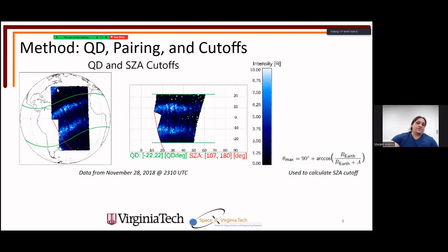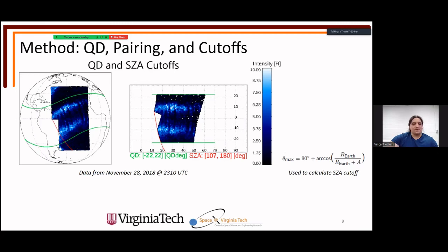Quasi-dipole cutoffs are applied: we exclude polar data and dayside terminator data, restricting analysis to EIA regions we expect to observe, unaffected by solar illumination. The solar zenith cutoff of 107° is calculated using a geometric function involving parallel light rays.